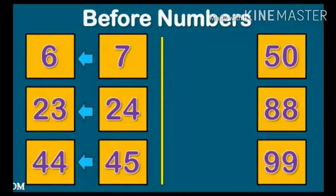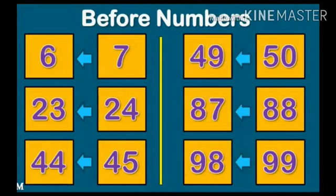Let's do this worksheet. Number 6 comes before number 7. Number 23 comes before 24. 44 comes before 45. What comes before 50? Yes, 49 — 49 comes before 50. Similarly, 87 comes before 88 and 98 comes before 99.